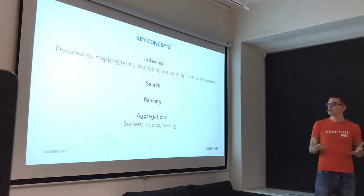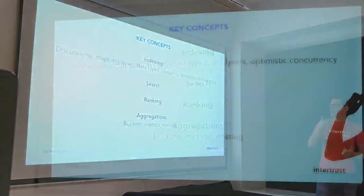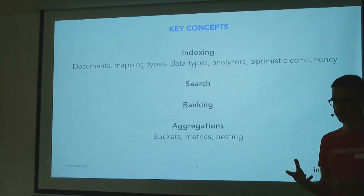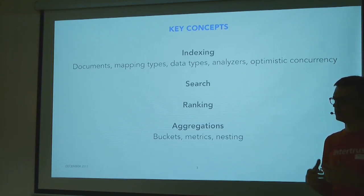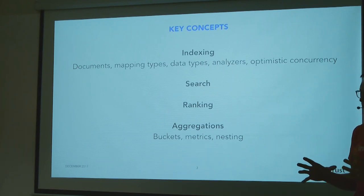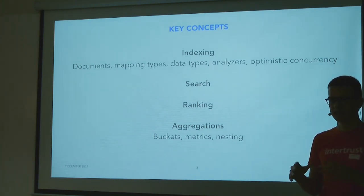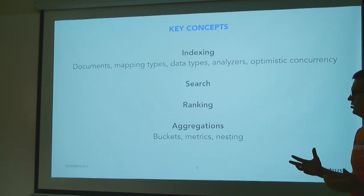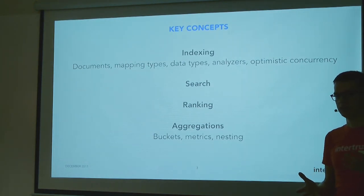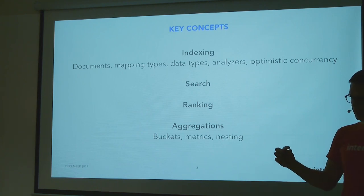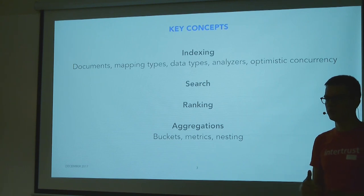Before we look at Elasticsearch itself, a few concepts to make the demo more easily understandable. Before you can search or analyze your data, you need to get some data into Elasticsearch by indexing it. You index documents — you can think of a document as a row in a relational database. For example, an article on Wikipedia might be a document, or one log line from your Uber ride might be a document.